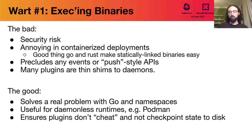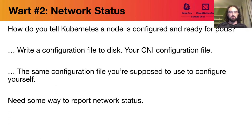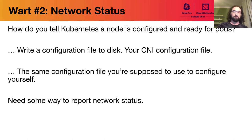That's the first wart with CNI 1.0. The second wart, which some people have probably discovered themselves, is around network status. How do you tell Kubernetes that a node is configured and ready for pods to be scheduled to it? The answer is you write a configuration file to disk — which is a bit strange because it's the same configuration file you're supposed to use to configure yourself. CNI needs a better way for network status to be reported. Right now we only have attachment status; network status doesn't exist in the CNI model.